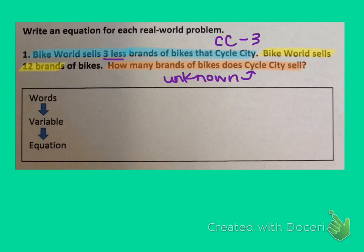But we can't jump ahead to the variable yet. First we have to just write the most important words from the problem to help us come up with our equation. So I'm going to abbreviate. I'm going to say CC for Cycle City brands minus three equals BW for Bike World brands.